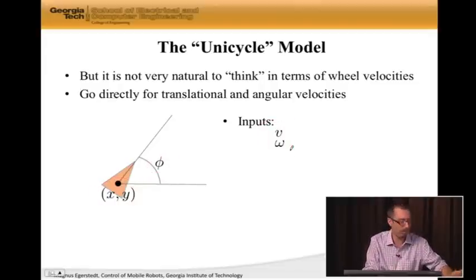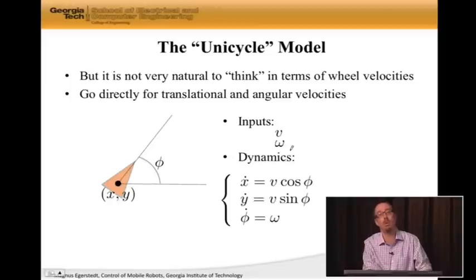So if you have that, how do we map them onto the actual robot? Well, the unicycle dynamics looks as follows.